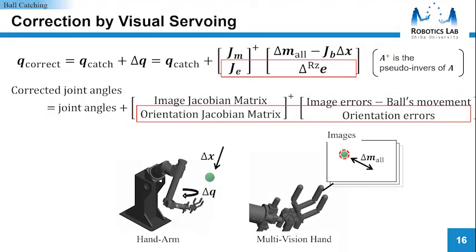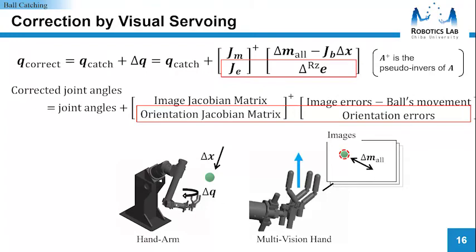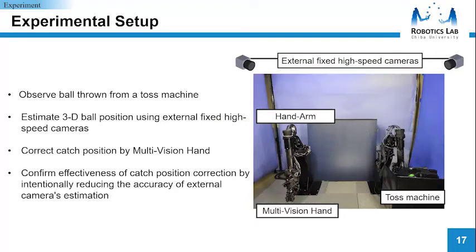The second control is optimization of orientation. When the ball is catching, the robot hand face is necessarily upward in our task. However, the first control is not concerned with the robot hand orientation. Therefore, we need to add this second control. Next, the experiment.